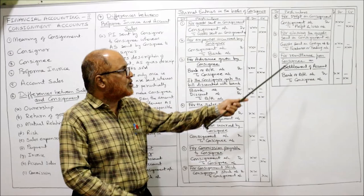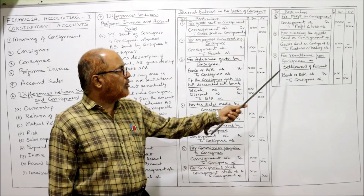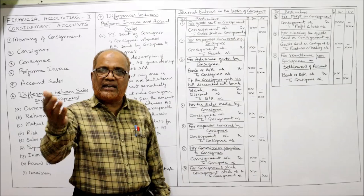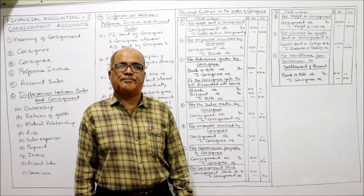For final remittance received from the Consignee: if a draft or cheque is received, entry is Bank Account Dr. to Consignee Account; if a bill is received, Bills Receivable Account Dr. to Consignee Account. These are all the journal entries to be passed in the books of the Consigner. All problems are based on these entries, so watch them two, three, or four times — then only you will be able to solve the problems.